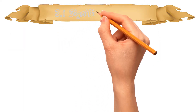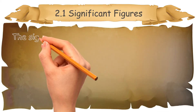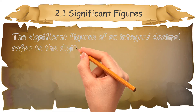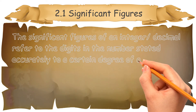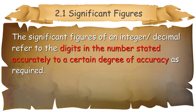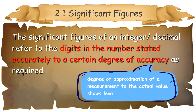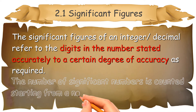First, we go to 2.1 Significant Figures. The significant figures of an integer or decimal refer to the digits in the number stated accurately to a certain degree of accuracy as required. Accuracy means the degree of approximation of a measurement to the actual value, showing the level of accuracy. The number of significant figures is counted starting from a non-zero digit.